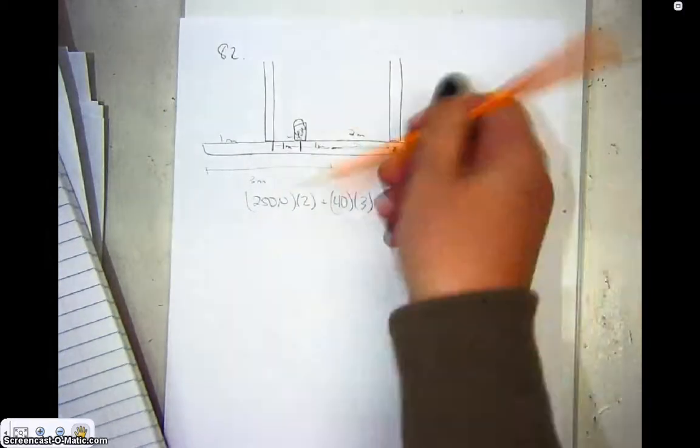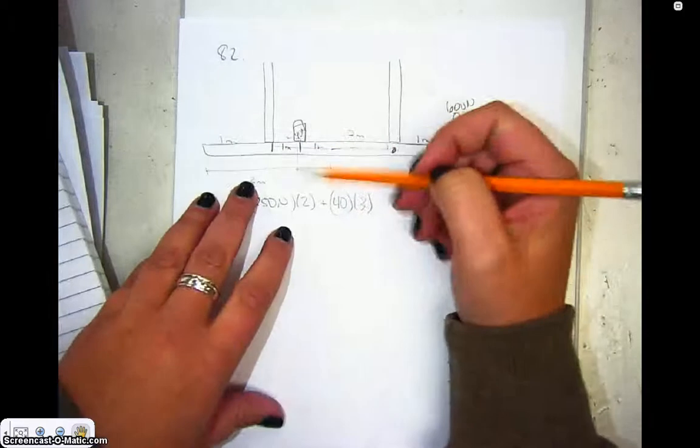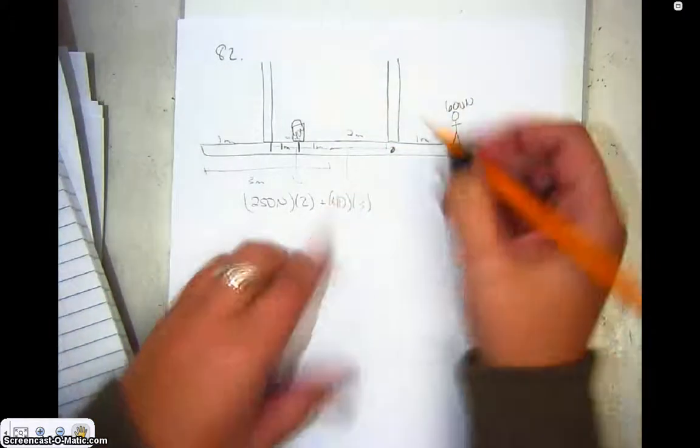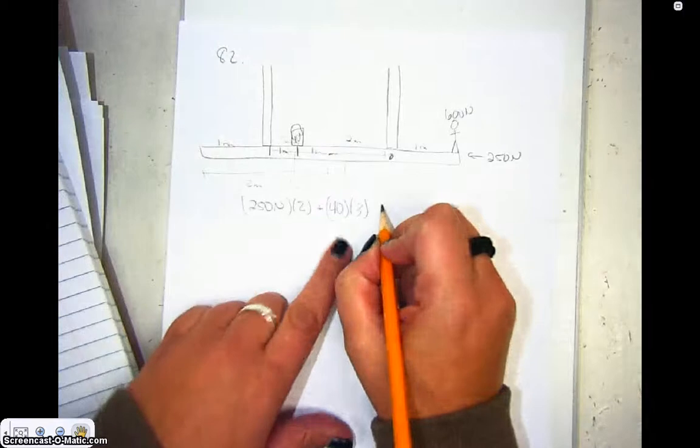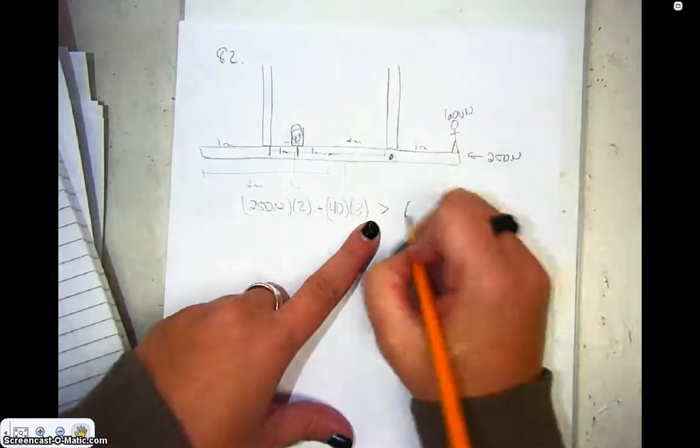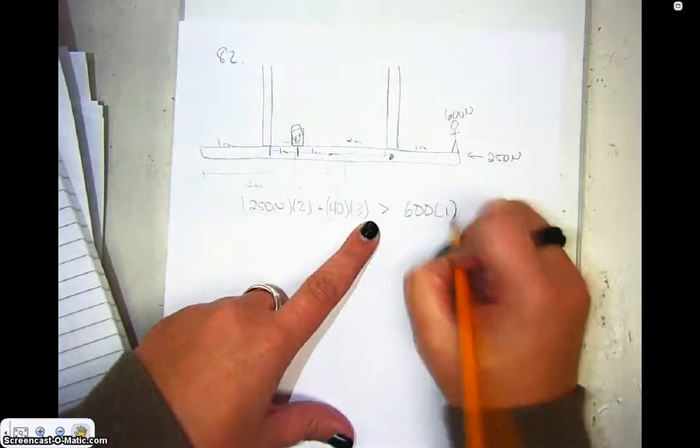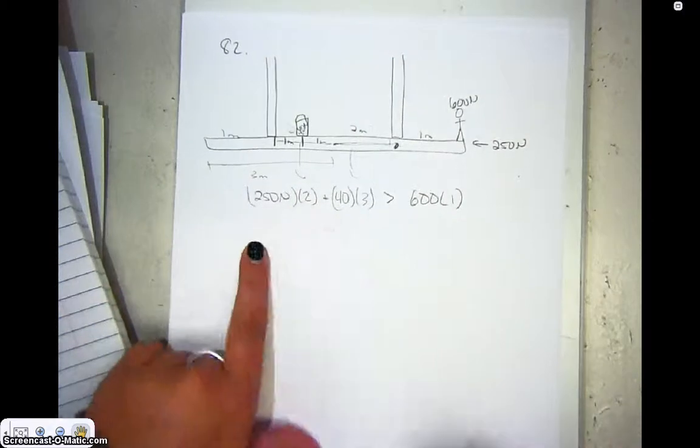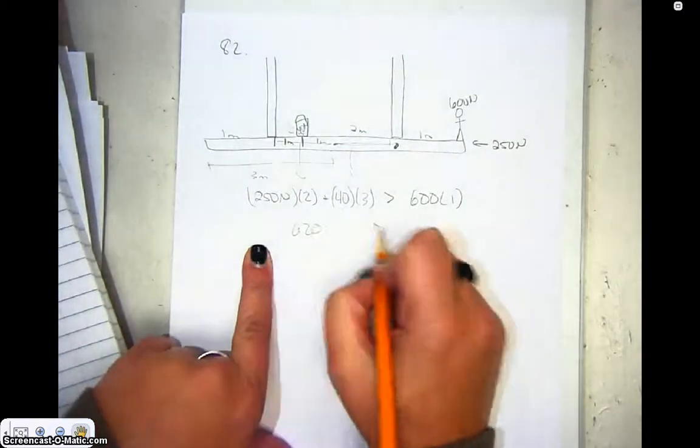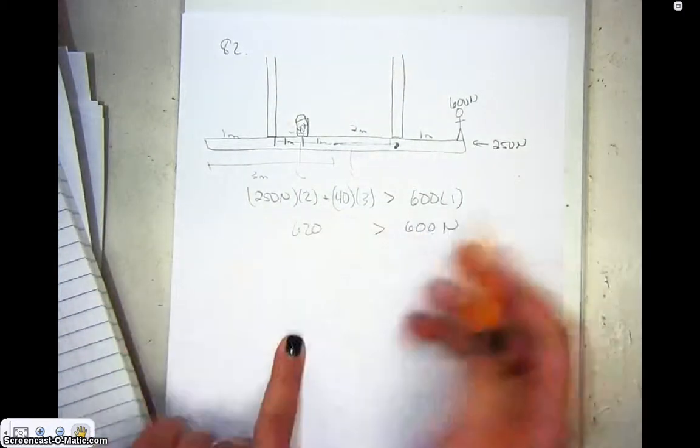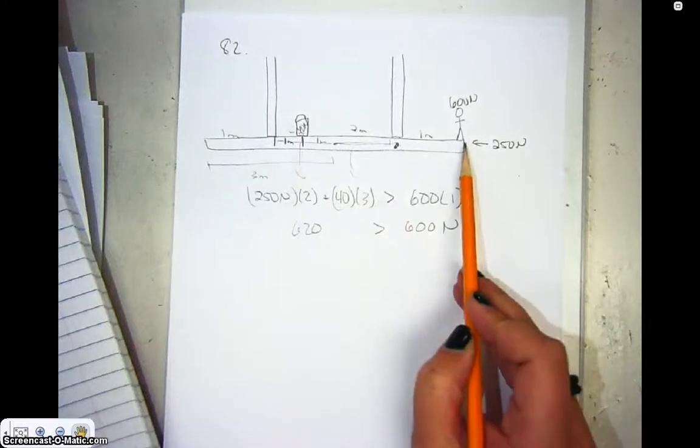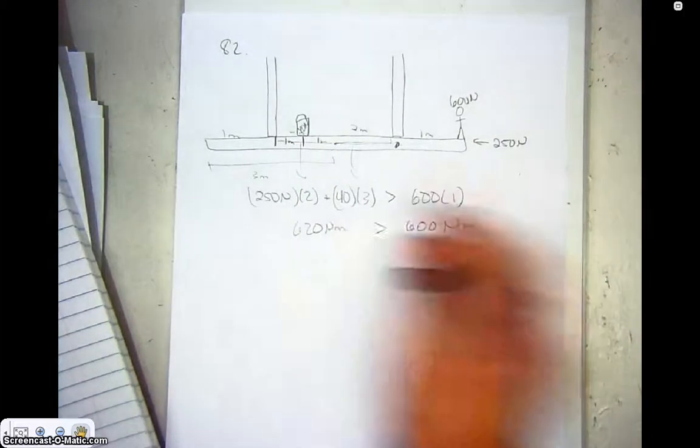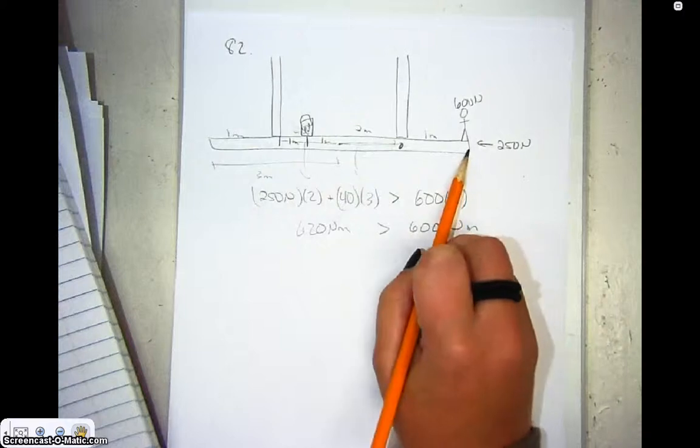We're hoping that all of that is big enough of a force in this direction that this guy standing over here trying to tip it up won't counteract it. So we're hoping that is bigger than 600 times 1. And so we calculate that's 500 and that's 120, so we get 620 is bigger than 600 newton meters. So yeah, he can walk safely all the way to this side.